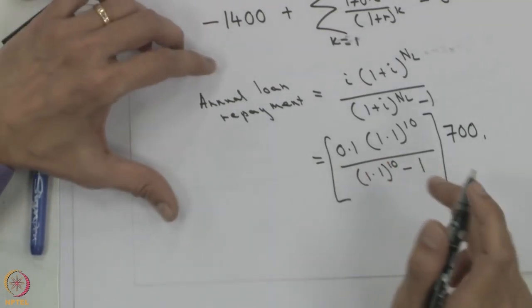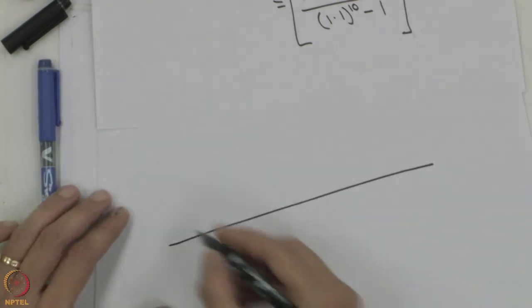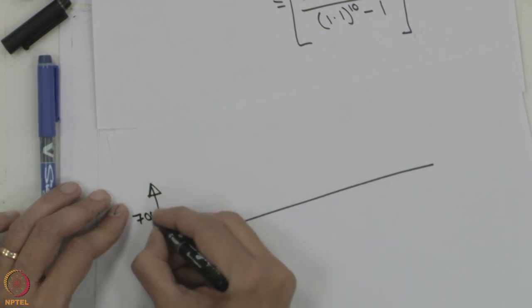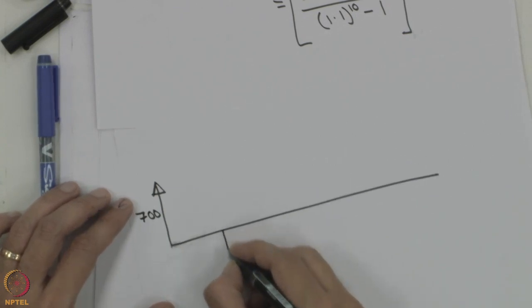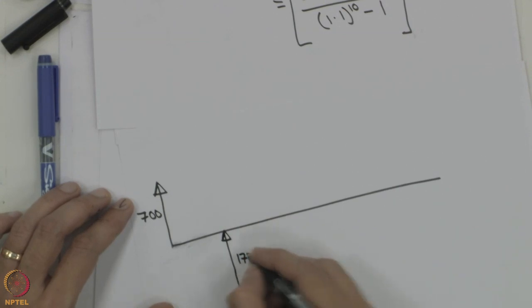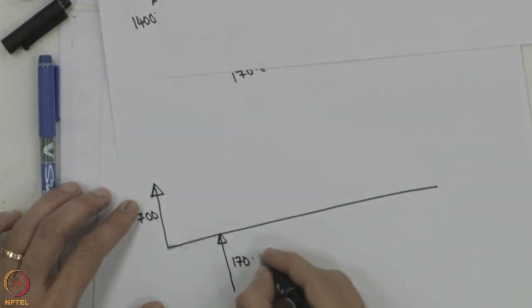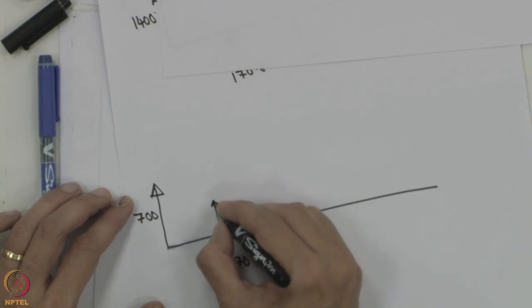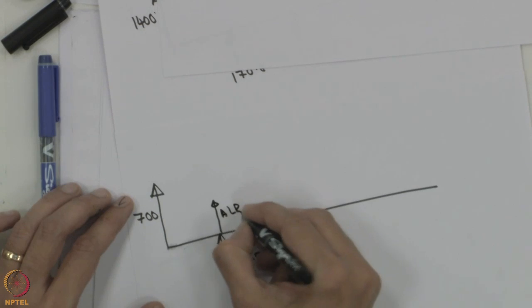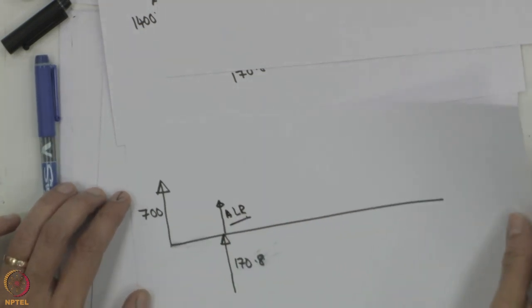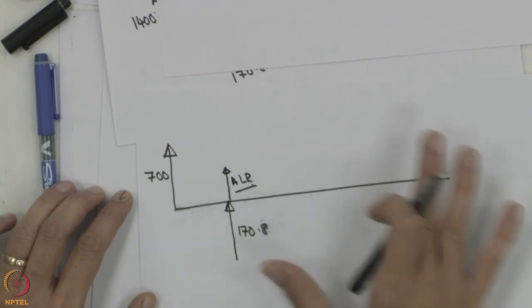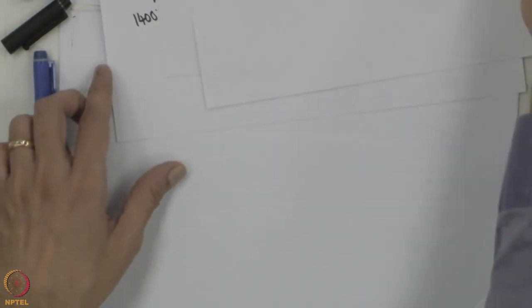In the leveraged case, instead of paying 1,400 crores upfront, we only pay 700 crores equity, and each year we receive 170.8 crores while paying out the annual loan repayment. This is very similar to the problem solved in the module. An Excel sheet with the complete solution will be uploaded so you can cross-check your numbers.